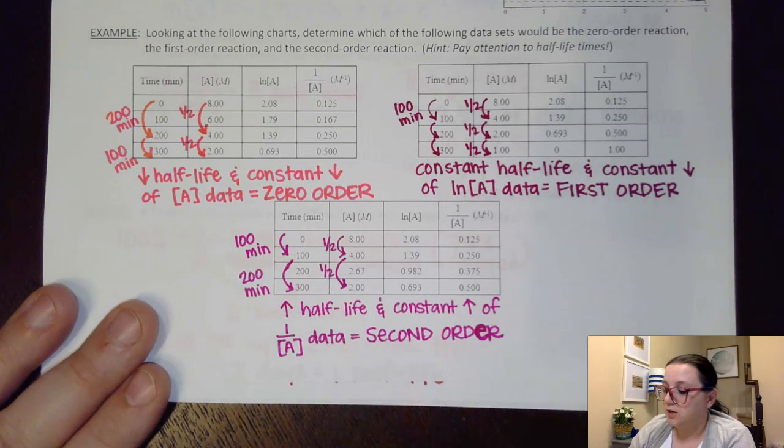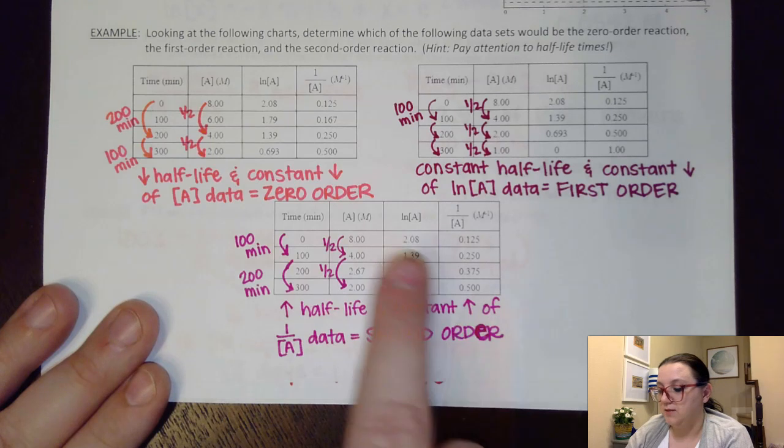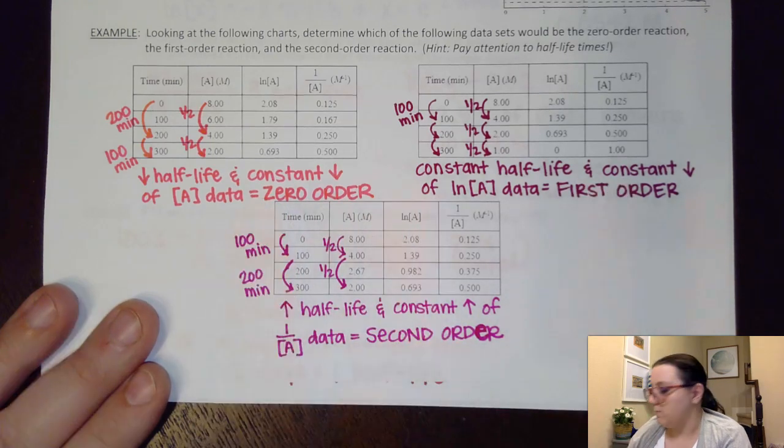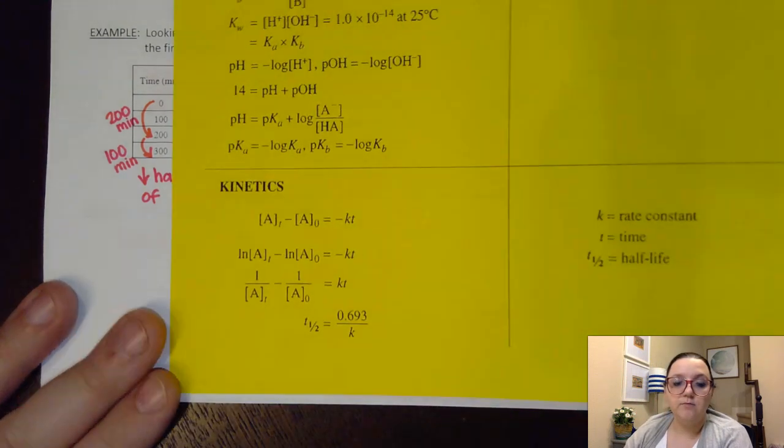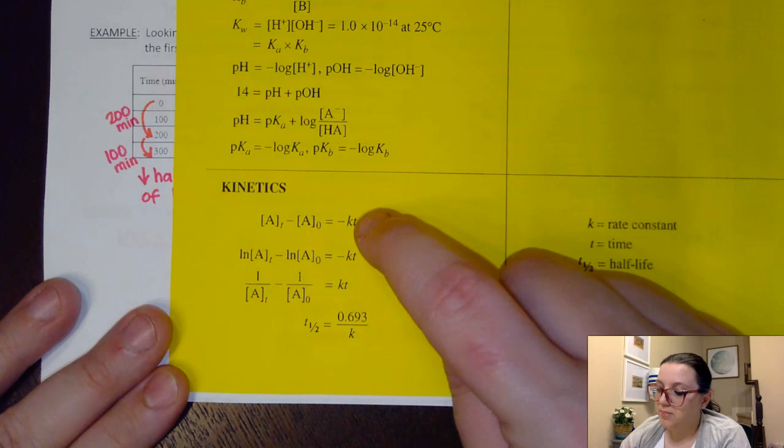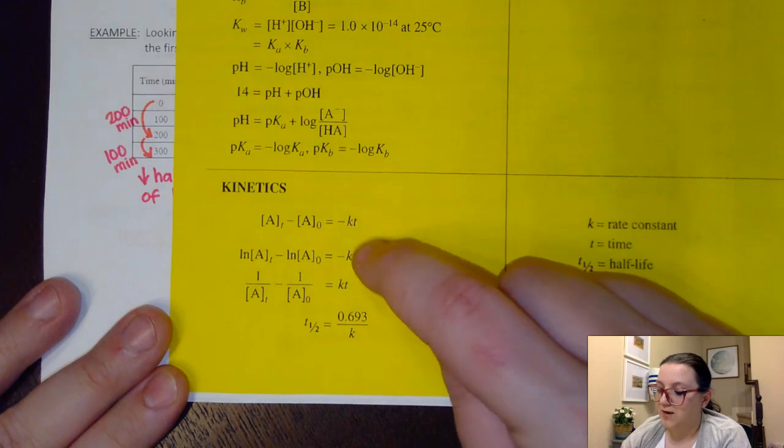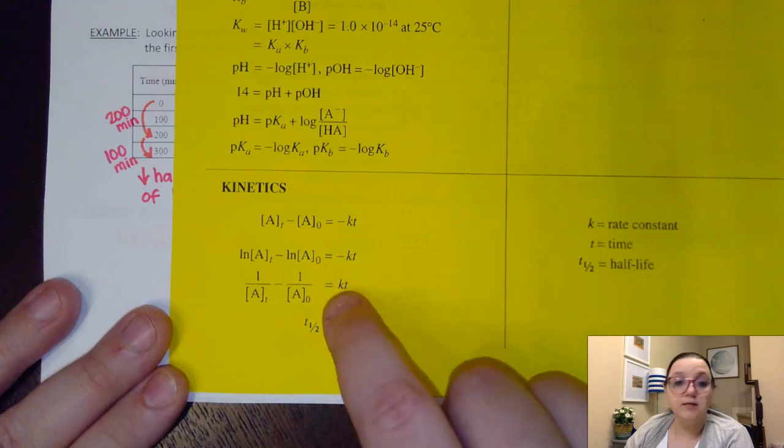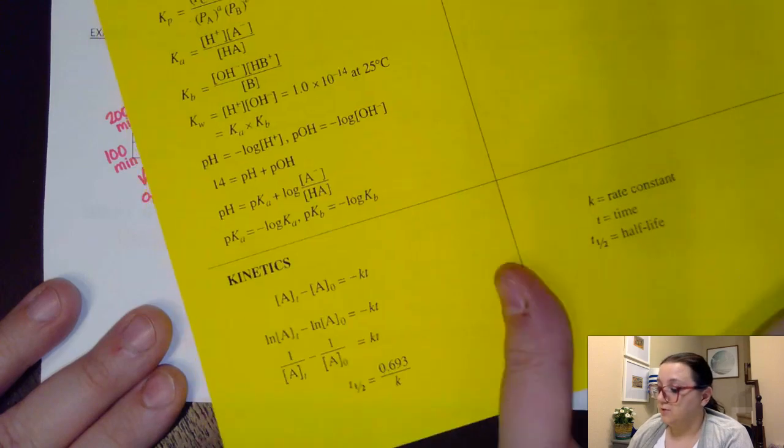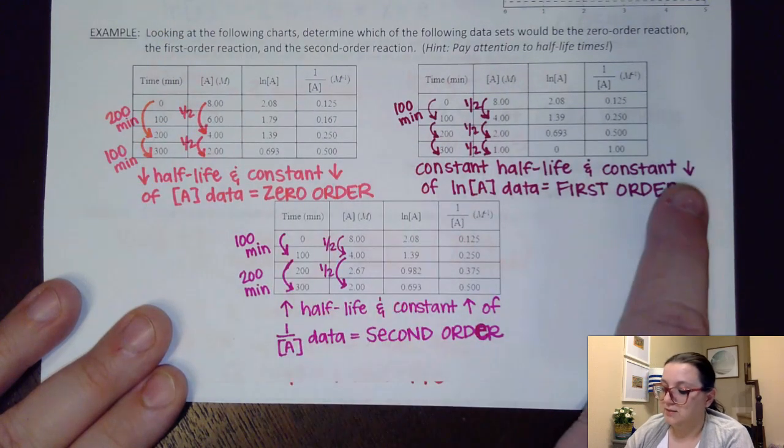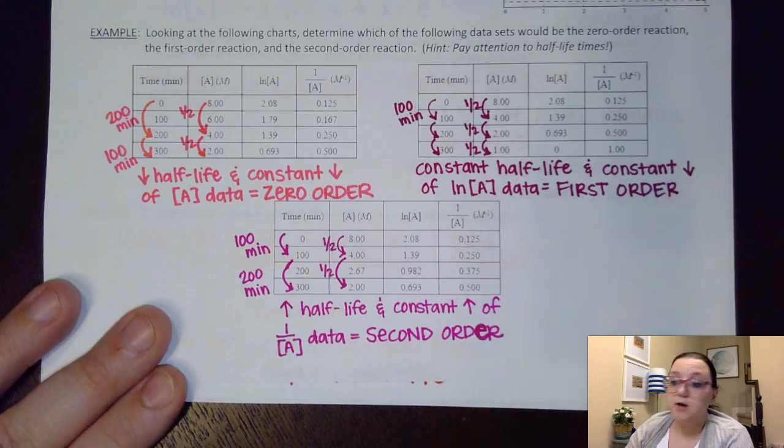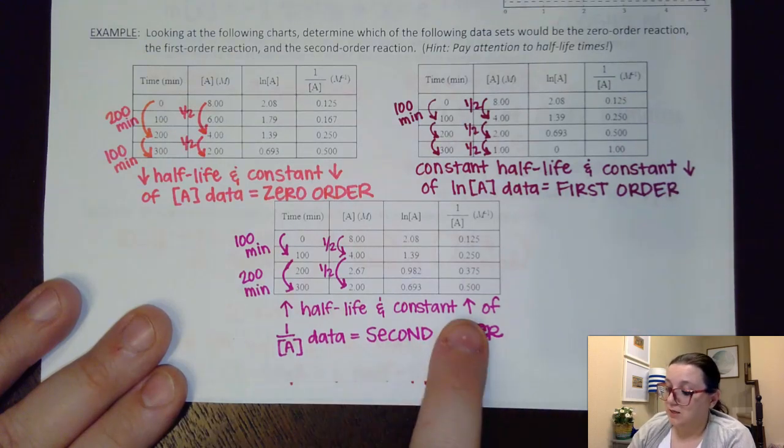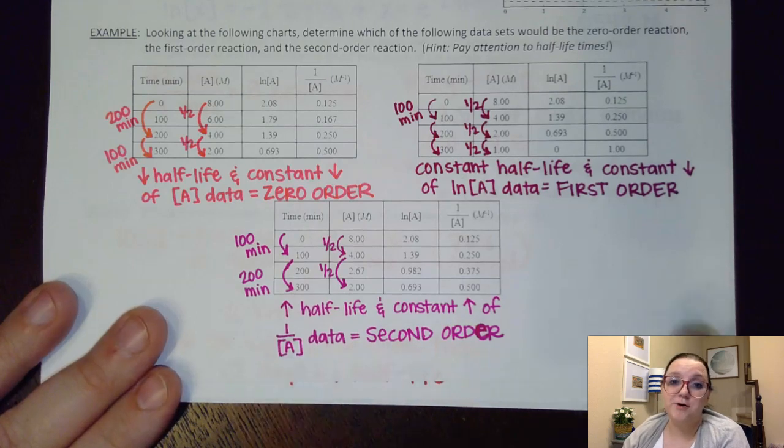I do want to mention here that people get thrown off when they see this increases and these other two decrease. Remember, that has to do with the formulas themselves. If we think back to these equations here, the zero and the first order had that negative K, so that would have been a negative slope there. Whereas our second order did not have the negative there, and so that would have been indicative of being a positive slope. And so, that's why you see that these had constant decreases of their data for whichever one was the linear. And then here, we had a constant increase of our 1 over A data for our linear graph.